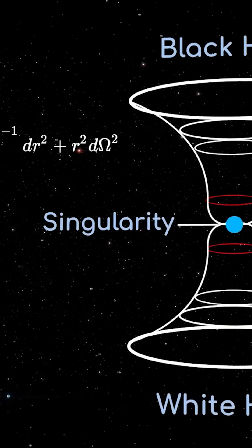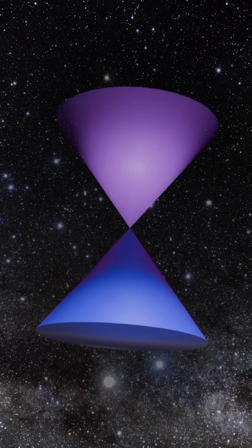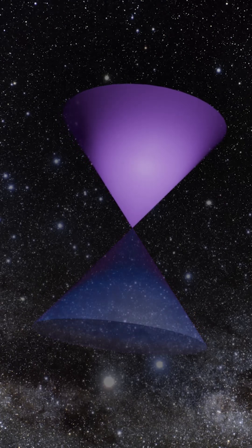This doesn't mean that every black hole comes attached to a white hole, though. Just like with cones, the real universe can contain chopped up pieces of the full mathematical solution.